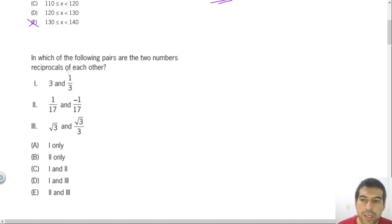If we take 3 and 1 third first, and multiply those numbers, 3 times 1 third. 3 is the same as 3 over 1. If we need to multiply fractions, we just multiply numerator by numerator, 3 times 1 will be 3, and denominator times denominator, 1 times 3 will be 3 again. 3 over 3 will be 1, so the first pair of numbers are indeed reciprocals.